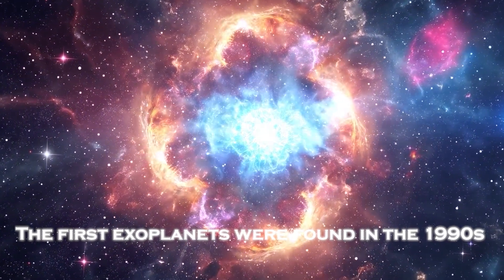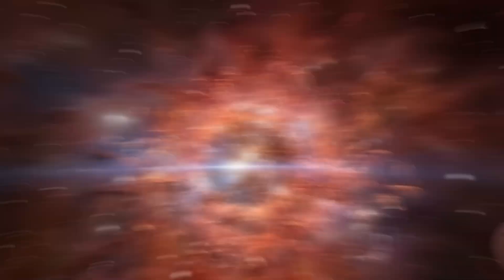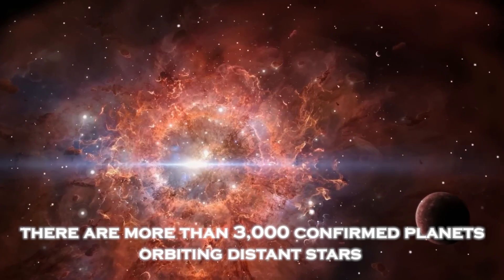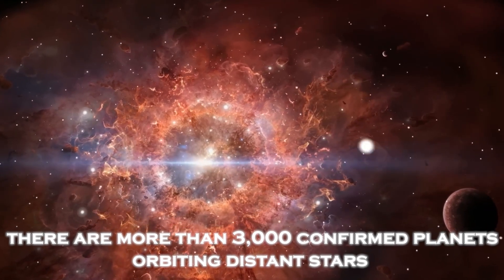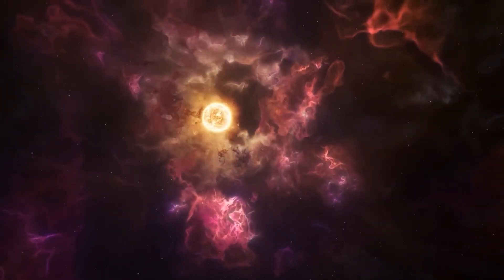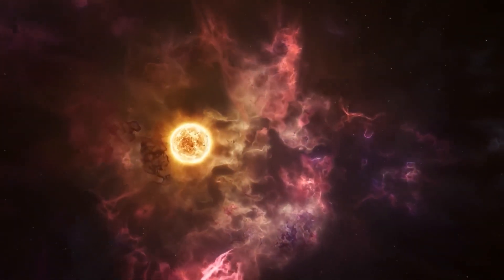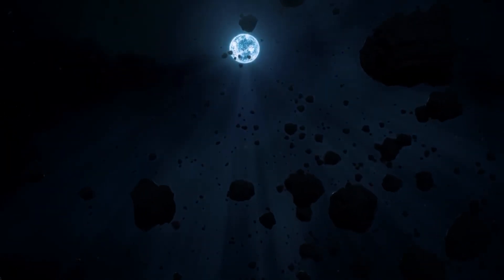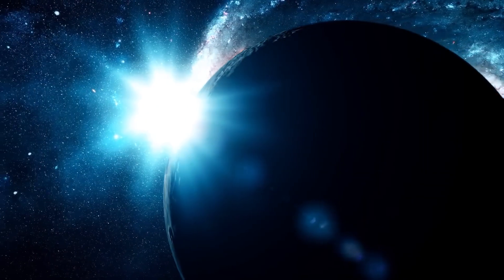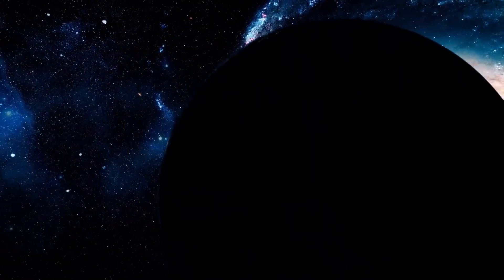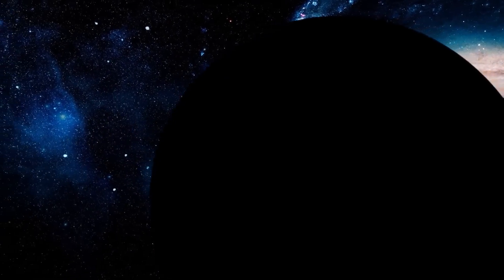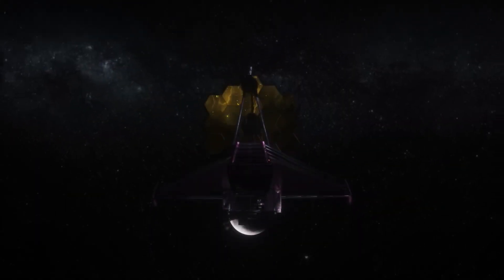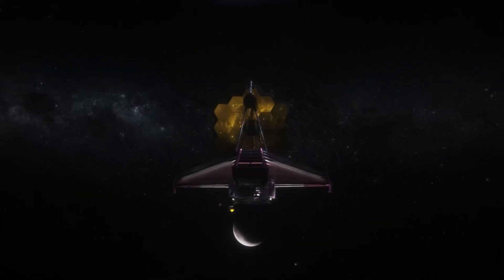The first exoplanets were found in the 1990s, and today there are more than 3,000 confirmed planets orbiting distant stars. However, only a dozen of them have been directly imaged. Most exoplanets are so far away that they can only be detected when the light from their host star is dimmed.